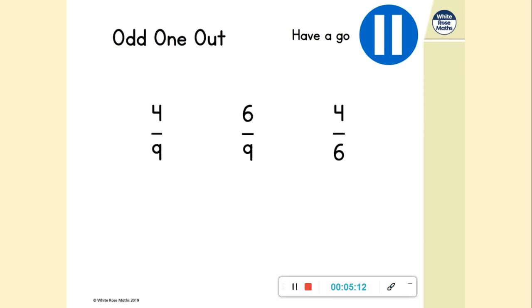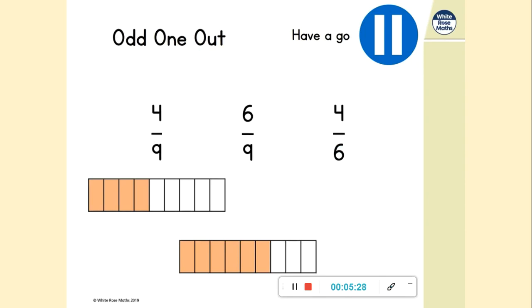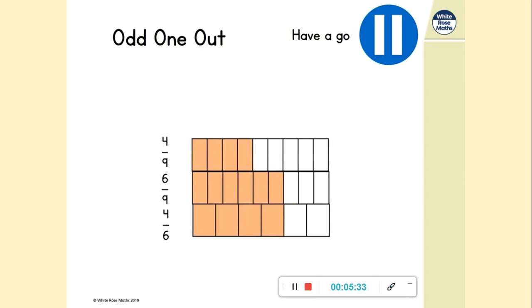Now we've got an activity, odd one out. Two of the three are equivalent and one is not. Use some bar model drawings. Remember, make sure the bars are the same length as each other to spot the odd one out. That will be my drawing of four ninths and there's six ninths and there's four sixths. If we push them together, we can see that four ninths is the odd one out because it's smaller than six ninths and four sixths. Six ninths and four sixths are equivalent. So four ninths is the odd one out there.